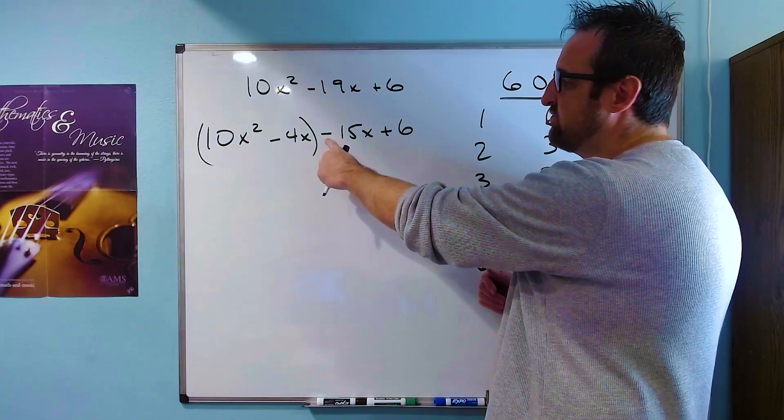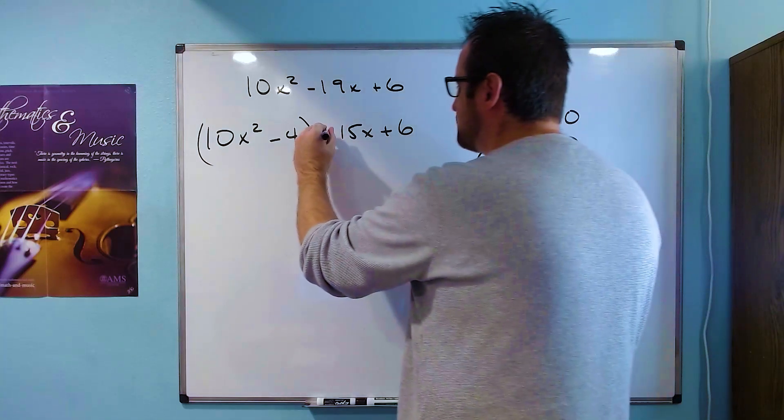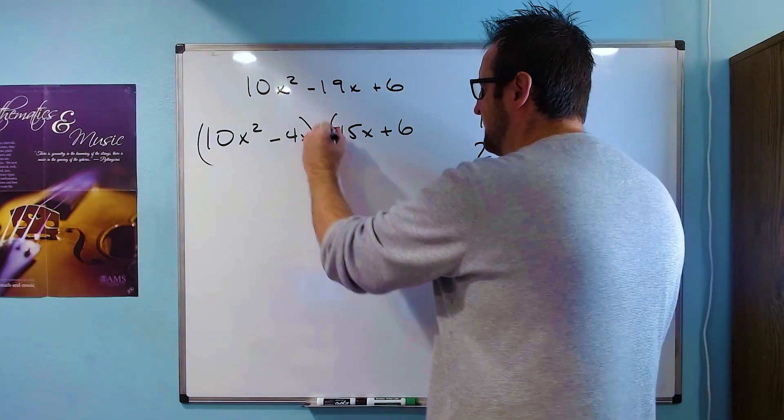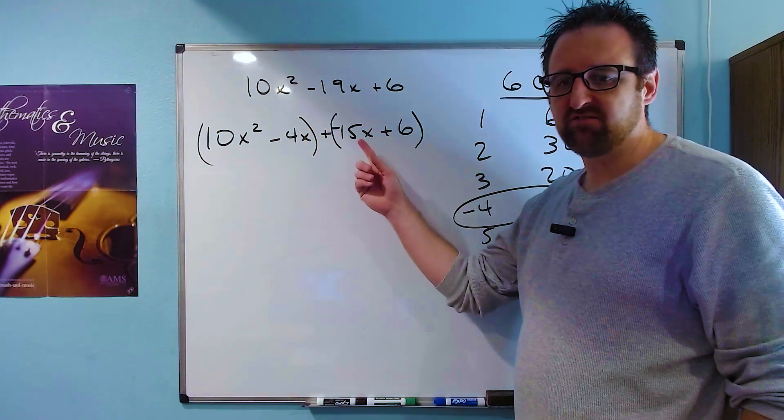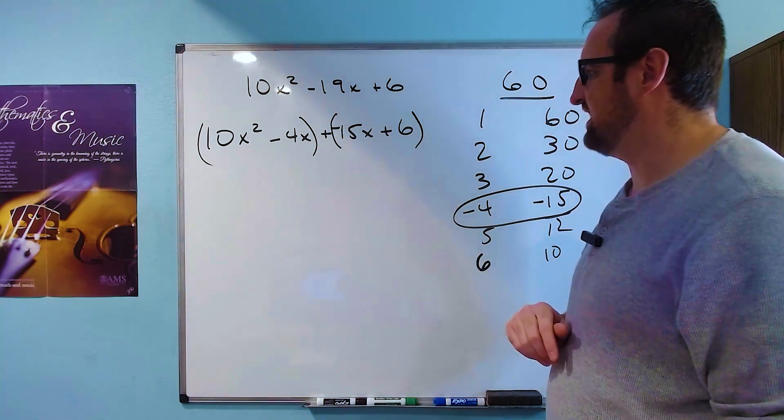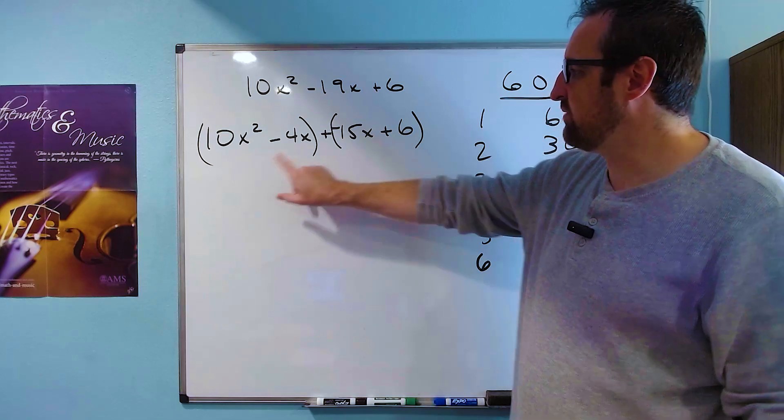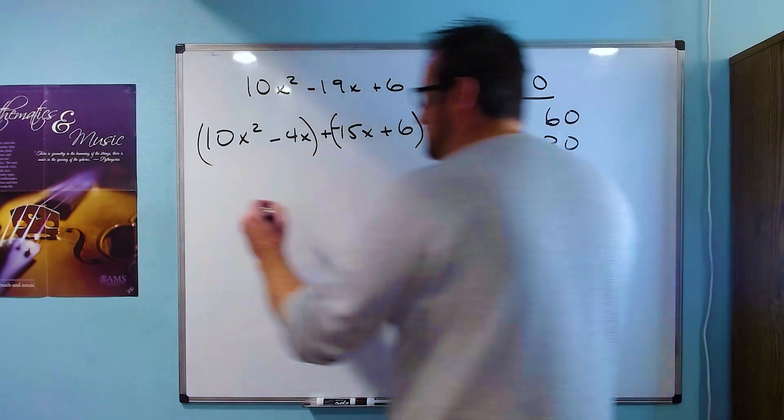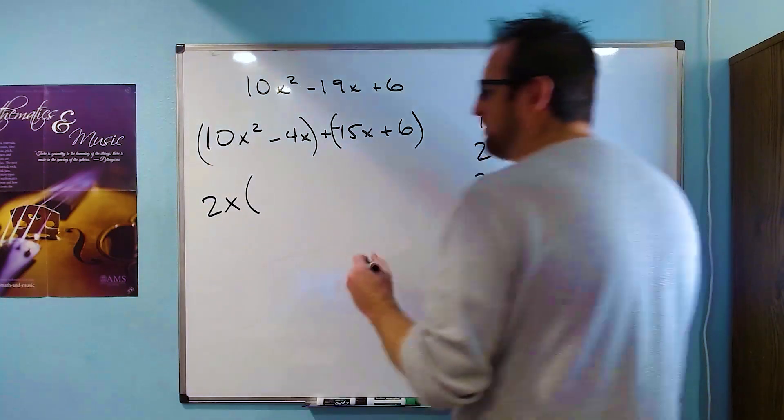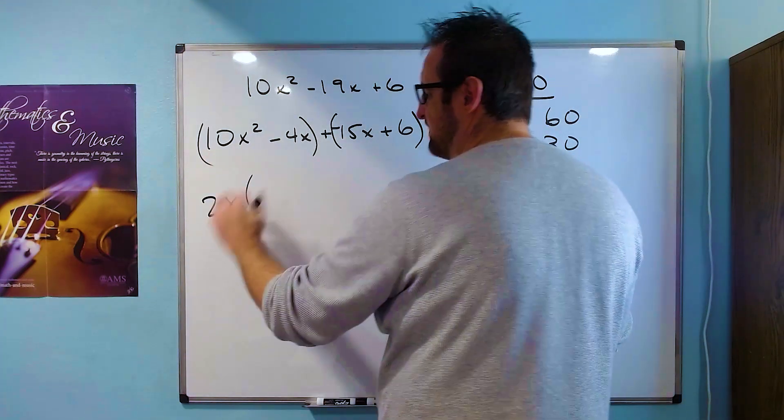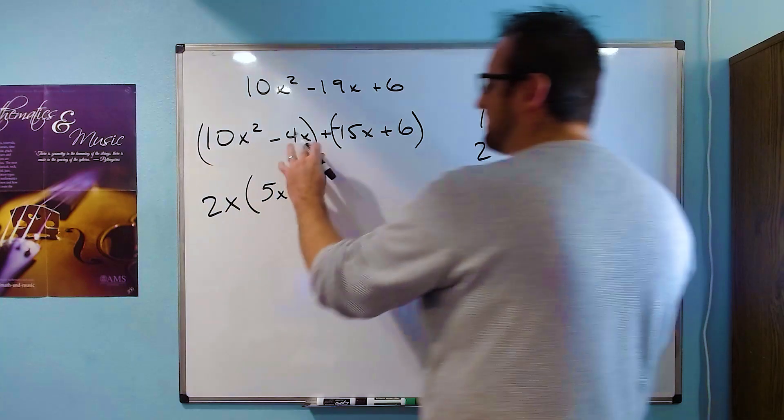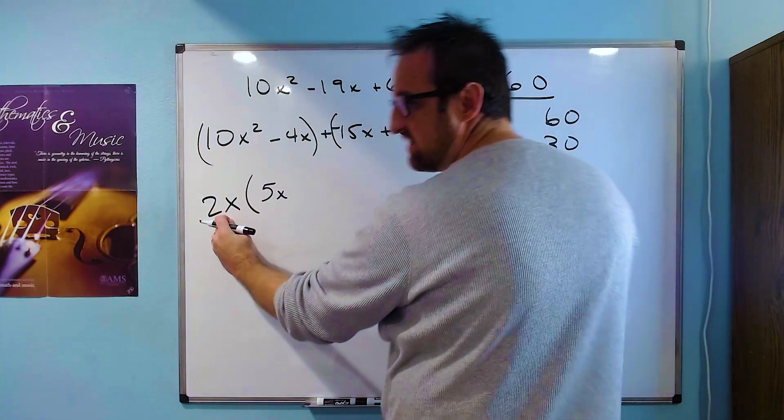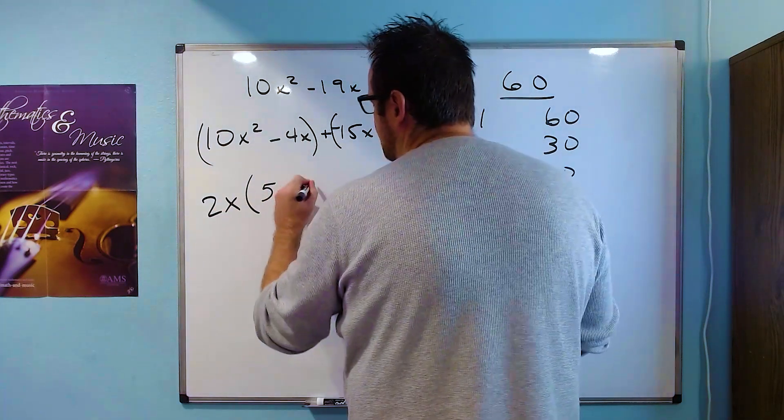At this point, we know it factors by grouping. So we'll group the first two terms together and the second two terms. And like we've done before, if there's a minus in front, you have to switch it to a plus negative and then group. We look at this pair and we notice they both have an x and they both have a 2. So we'll pull out a 2x from there. If we take 10x² and divide by 2x, we get 5x. And if we take negative 4x and divide by 2x, we get negative 2.